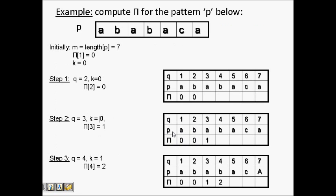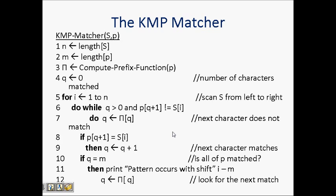Now we move on to the real string matching algorithm. We have n as the length of string s, and m as the length of pattern p. Then we compute the prefix function. q is 0 initially, and q represents the number of characters matched — so initially it will be 0.